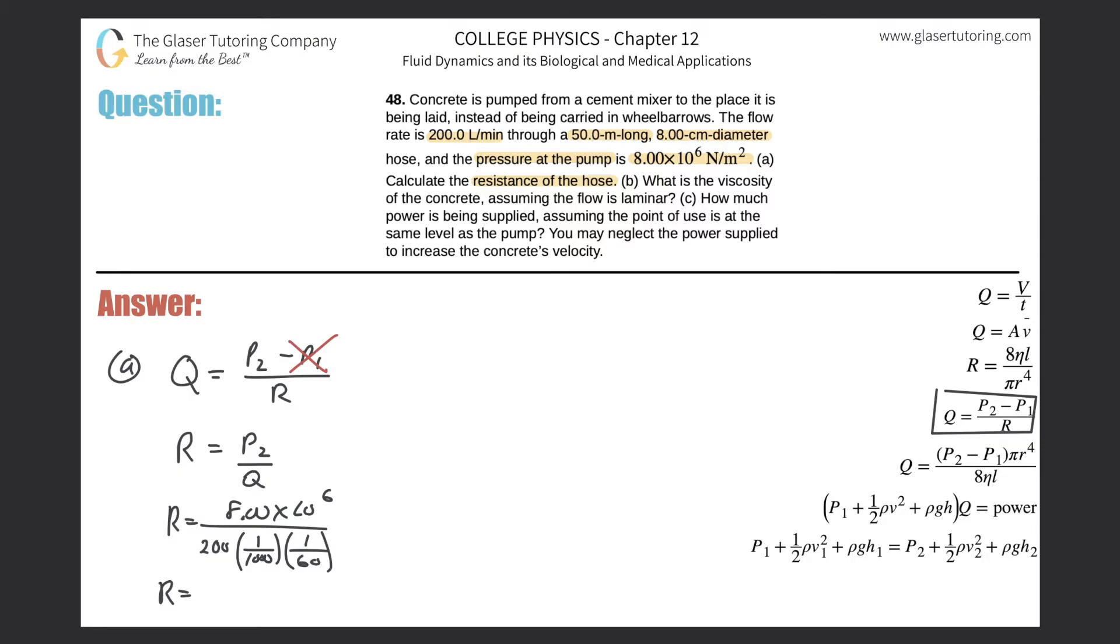Now let's calculate. So it's going to be 8×10⁶ divided now by 200, divided then by 1000, divided then by 60. And here we go. So the resistance here is going to be approximately 2.4×10⁹, and the units for resistance are going to be pascal.